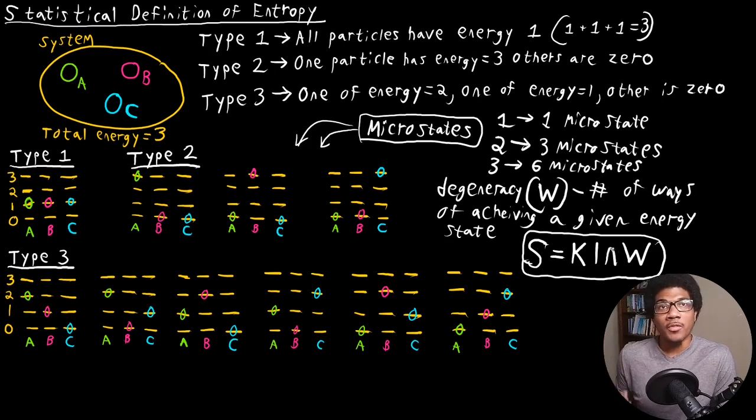And this gels well with our definition of entropy as the dispersal of energy. We say that the more dispersed energy is, the higher the entropy is. So the same thing here: the more ways you can disperse the particles or distribute particles in these different microstates, the higher the entropy is going to be.